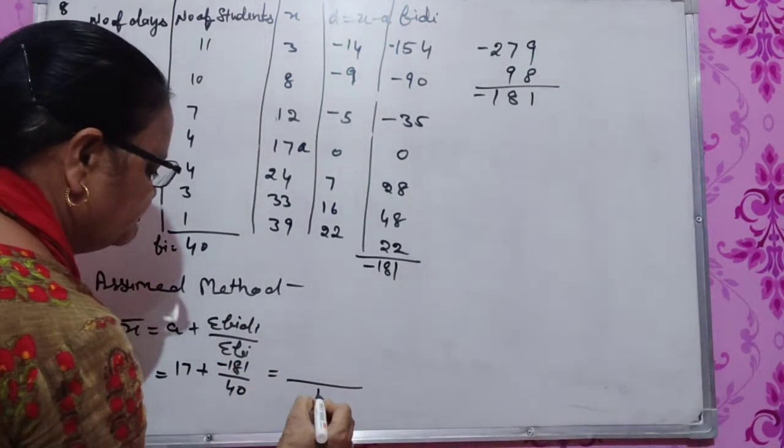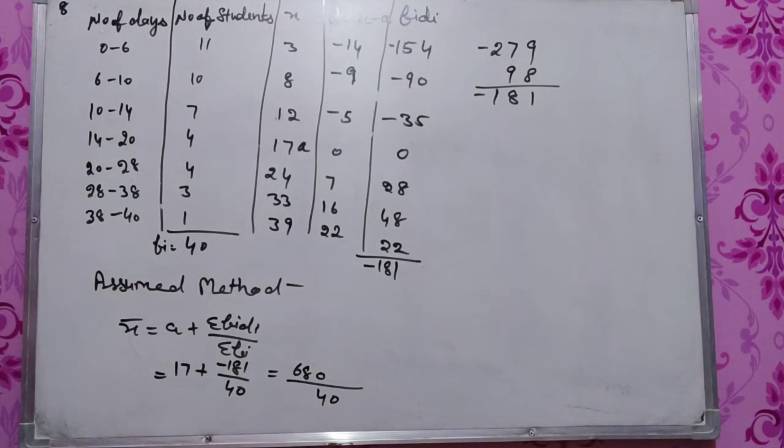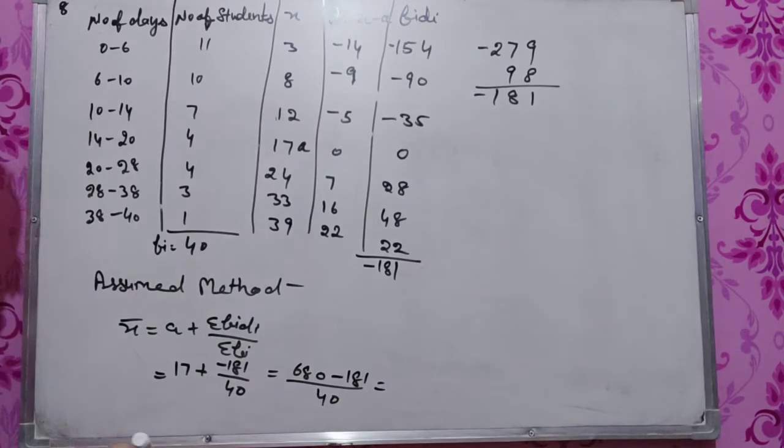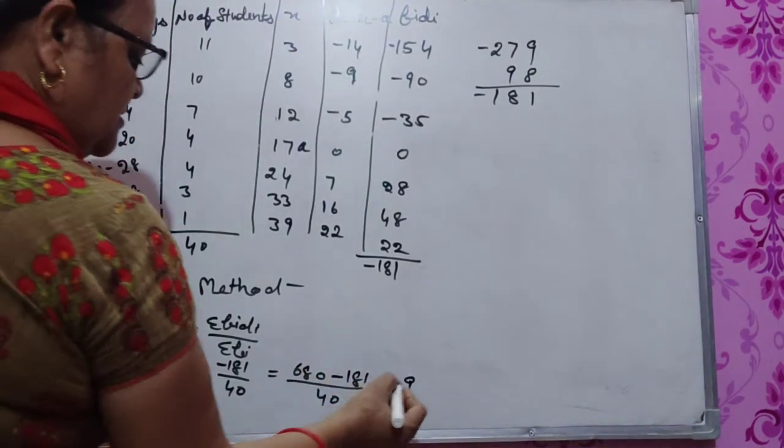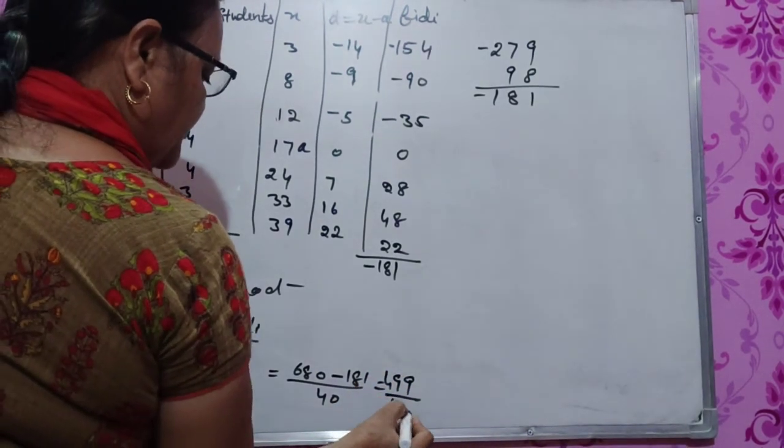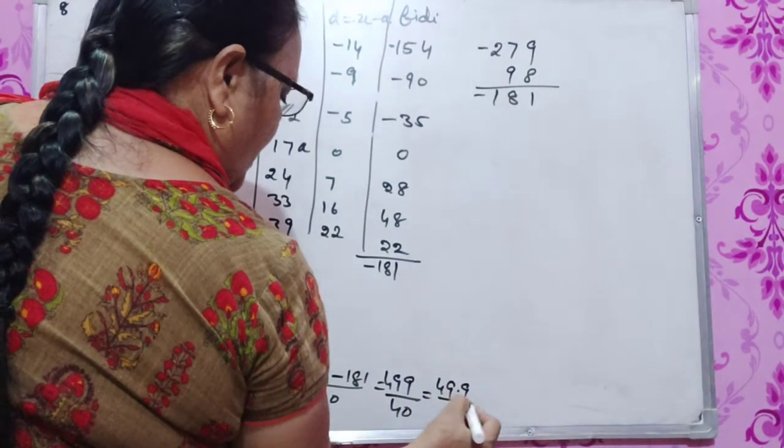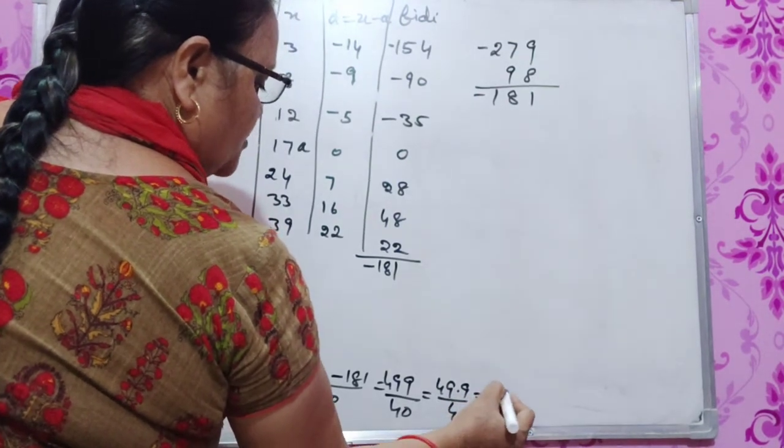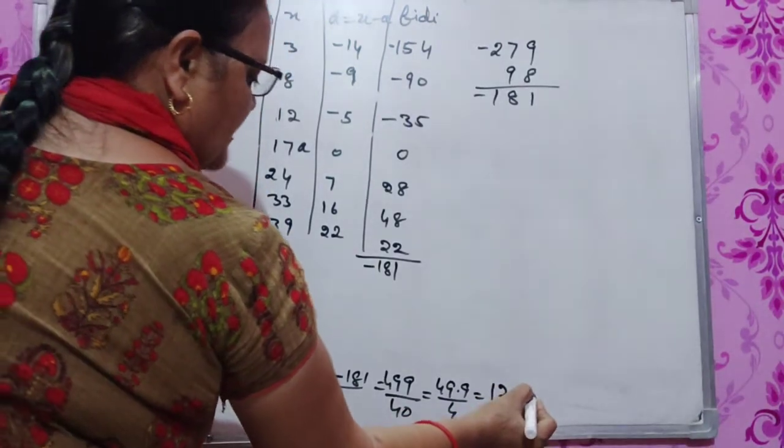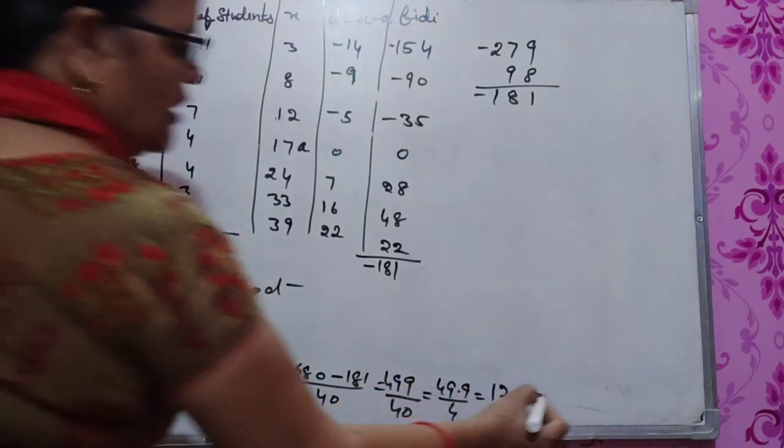17 times 40 equals 680 minus 181 equals 499 by 40. 499 by 4 equals 12 point, divide by 10, 1.2, so we get 12.47 or 12.67 days.